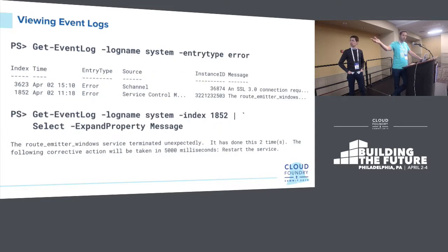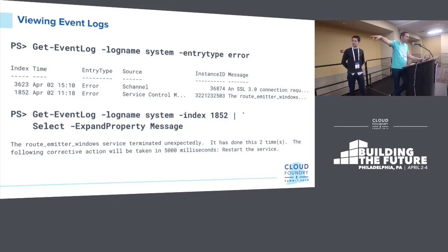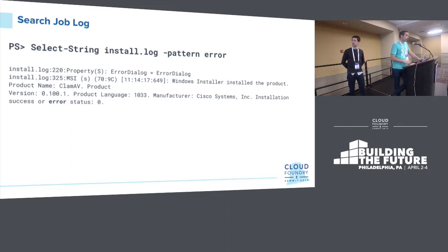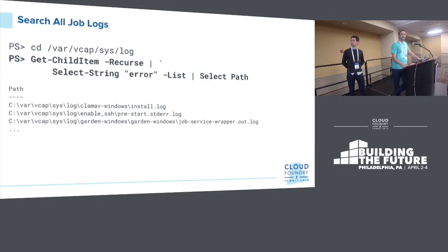Once SSHed in, you can grab event logs — for example, grab them from the system log looking for error entries, then expand one by index to see the full error message. You can also grep for errors or other strings within your log files using Select-String, effectively the PowerShell equivalent. You can search through a bunch of log files and pipe results into Select-Path to see all files where the string was found.